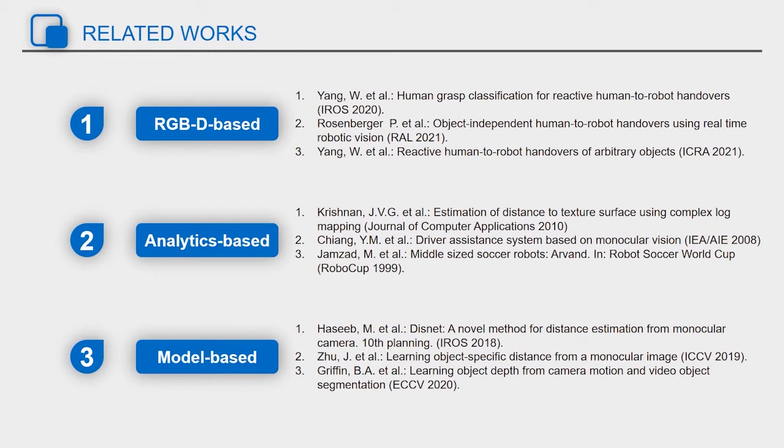For RGBD-based method, the object's distance is calculated from point cloud information, using a clustering algorithm. The object's distance is obtained by the source's spatial parameters and geometry.